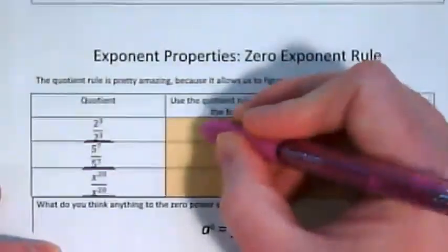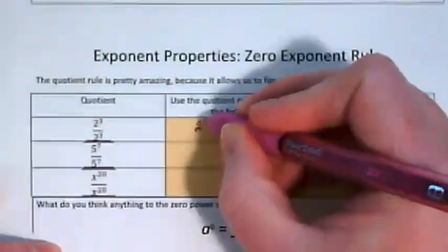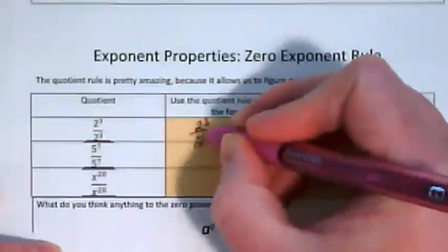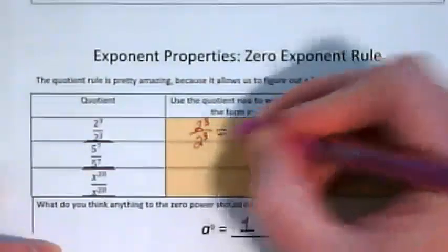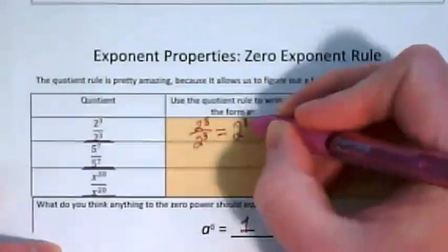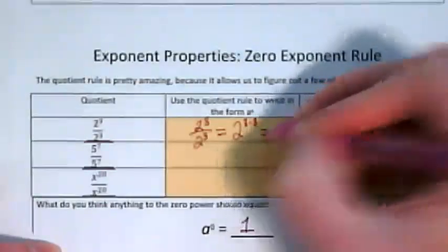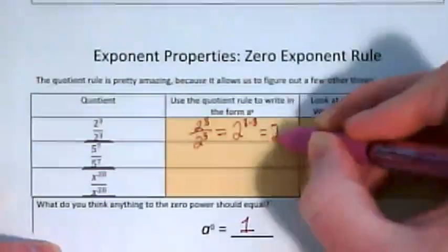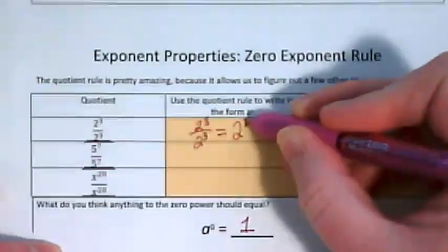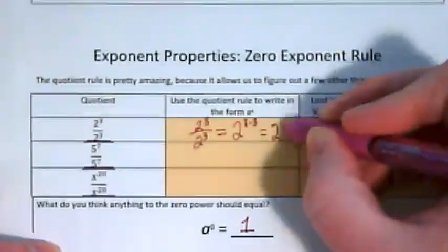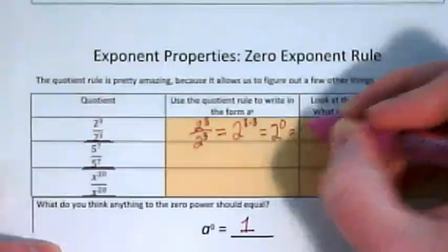If I use the quotient rule for this, 2 to the third power over 2 to the third power would be equal to 2 to 3 minus 3, and 2 to the power of 3 minus 3 is 2 to the zero power, which equals 1.